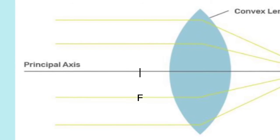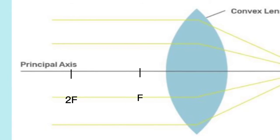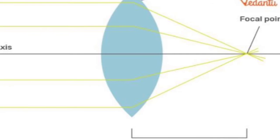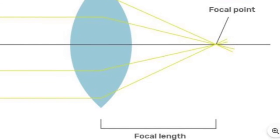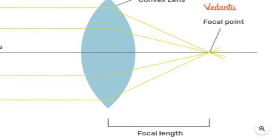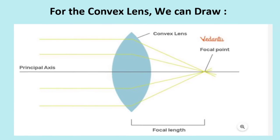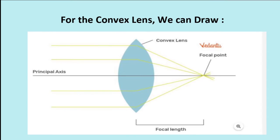The F here is represented as focal point. 2F here is represented as the double focal point. Focal length is the distance of one focal point from the lens. On the left side we must see the object, and on the right side we see the image.